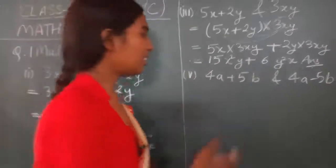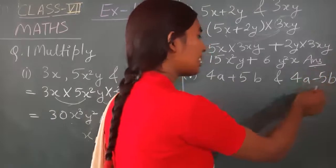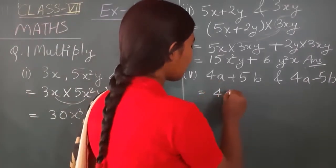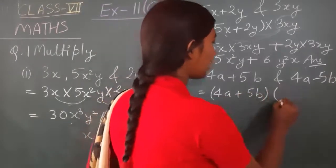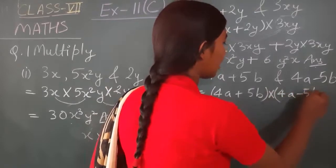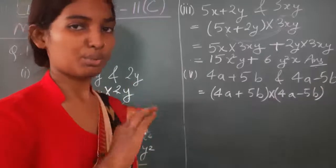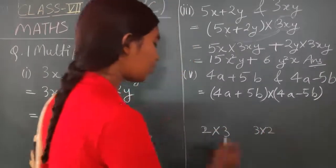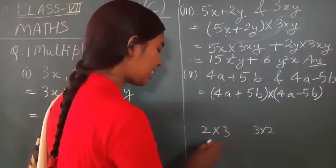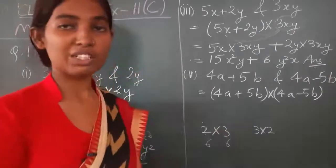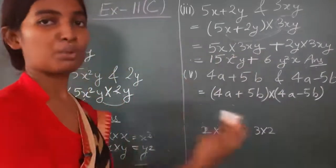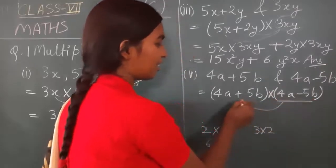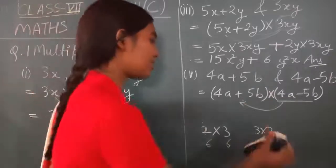In the fifth question, one polynomial has a plus and another has a minus. We multiply (4a + 5b) by (4a − 5b). There is no fixed rule about which to multiply first — just like 2 into 3 or 3 into 2 both give 6. You can multiply from either side; it depends on you.